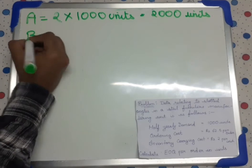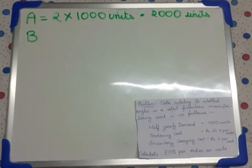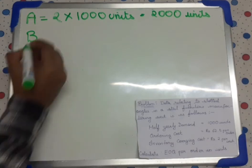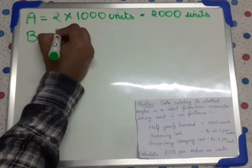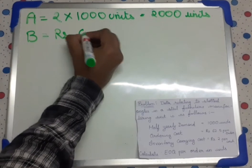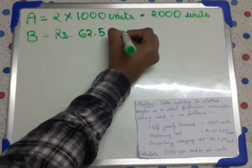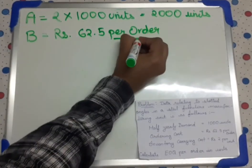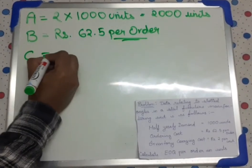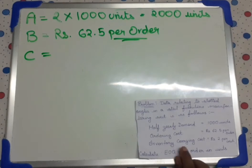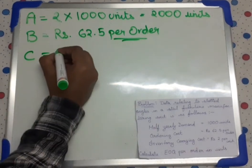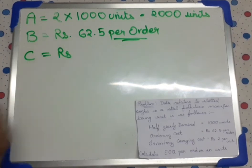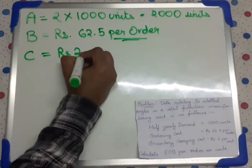Now what is B? That is buying cost or ordering cost per order. Here they have given it is rupees 62.5, so buying cost or ordering cost is rupees 62.5 per order — always remember it is per order. Now, inventory carrying cost C is rupees 2 per unit.